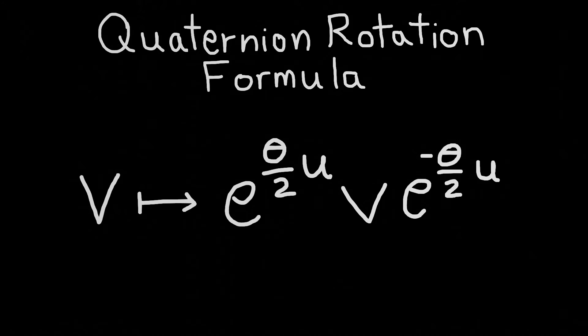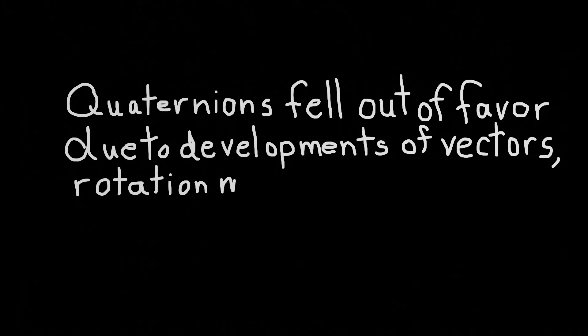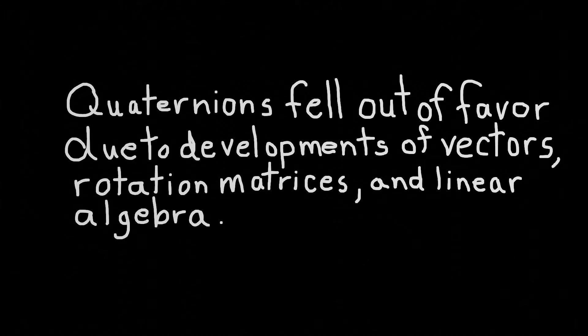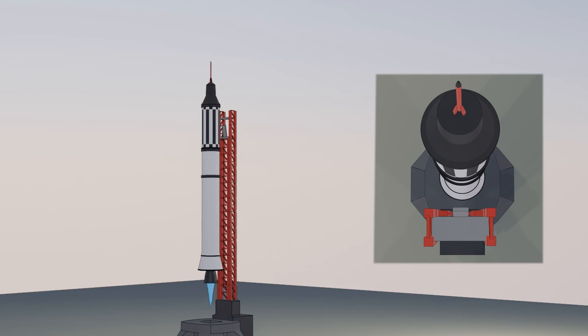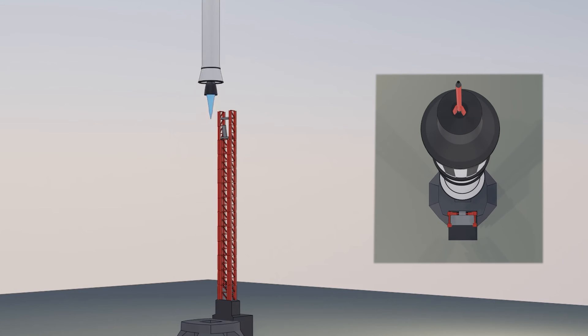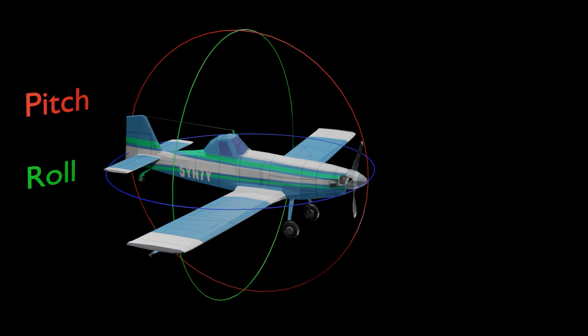This allows you to rotate a chosen quaternion, v, around any chosen unit quaternion, u. With the development of vector calculus, rotation matrices, linear algebra, quaternions sort of fell out of favor for a while until the invention of computers and the space program needed a more reliable way to represent rotations versus the traditional Euler angles and their adaptation to pitch, roll, and yaw by the aviation industry.